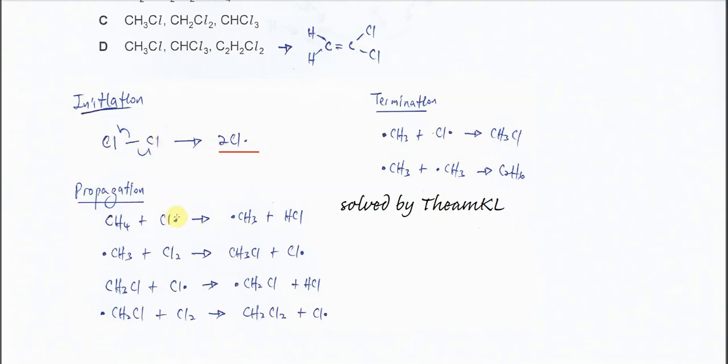The chlorine radicals produced will attack the methane molecule and get one hydrogen to form HCl. Therefore it will form a methyl radical, and this methyl radical will continue to attack another chlorine molecule.